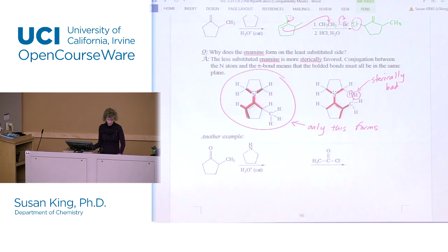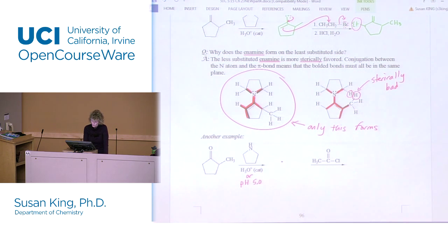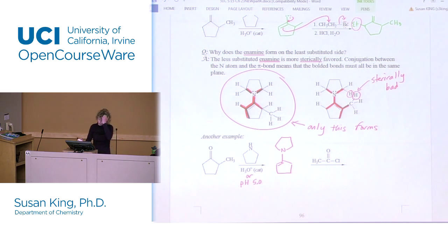Here's another example of using this. We can make the enamine — this is the most common enamine to use, though not the only one. You could use dimethylamine or diethylamine. You use H3O+ catalyst, or pH 5.0 to make the enamine. Those are the best conditions for making an enamine or an imine. We selectively form the enamine on the least substituted side, and then we can attack acid chlorides just like we've seen before.